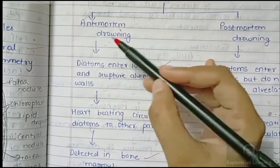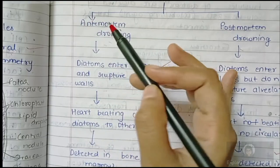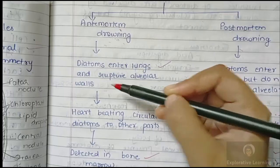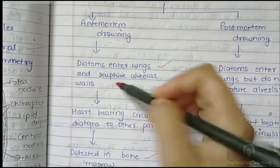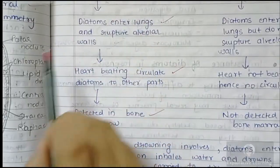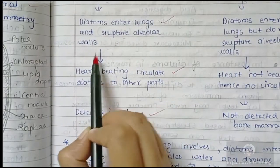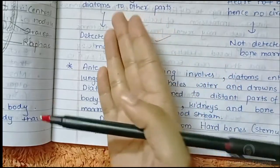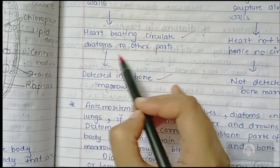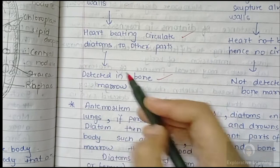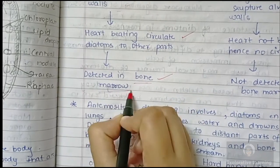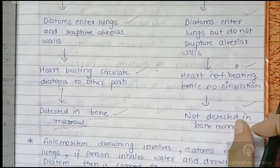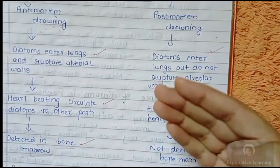While breathing, diatoms enter the lungs, meaning there must have been a struggle for survival. Diatoms enter the lungs and rupture the alveolar wall. Since the heart is beating and circulation is active, it pumps the diatoms to other parts of the body. In this case, the bone marrow is the site most commonly used as the source of diatom evidence. This is a very important segment as exam questions are often formed from this.